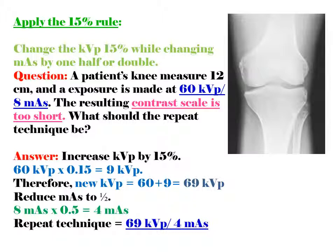Question: A patient's knee measures 12 cm and an exposure is made at 60 KVP, 8 MAS. The resultant contrast scale is too short, or too much white. What should the repeat technique be?